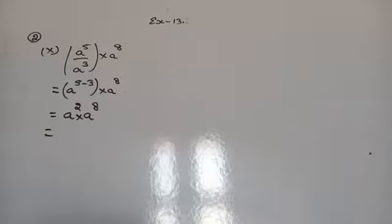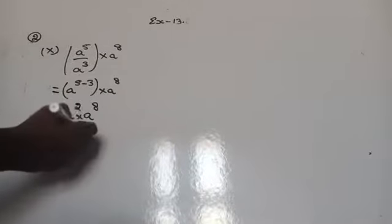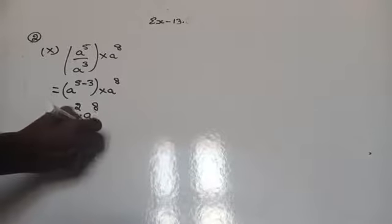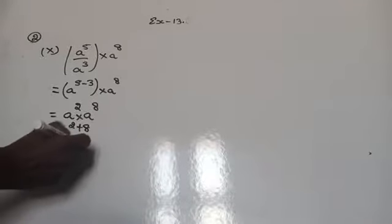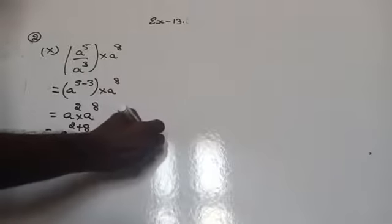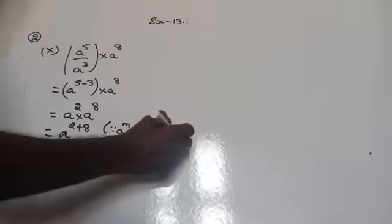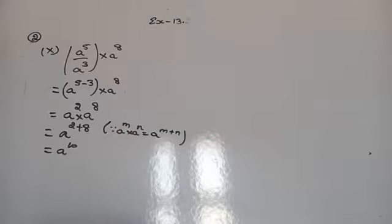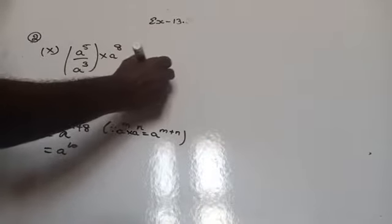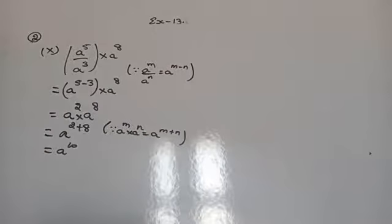Here we have a to the power 2 into a power 8, so it is in the form of a^m into a^n, giving a to the power m plus n — that is a to the power 2 plus 8, which is equal to a to the power 10. Since a^m into a^n is a to the power m plus n, and a^m divided by a^n is a to the power m minus n.